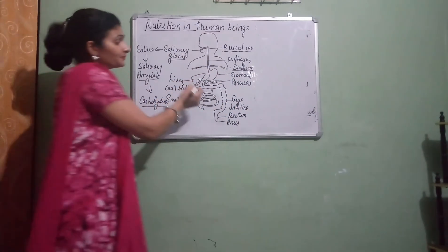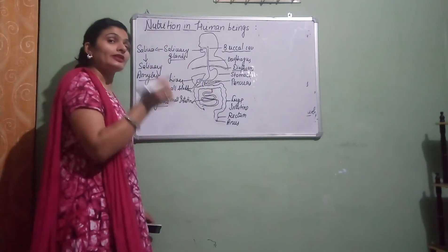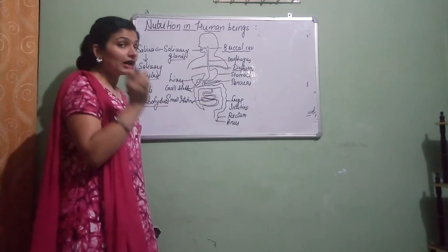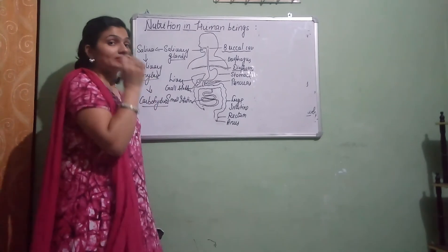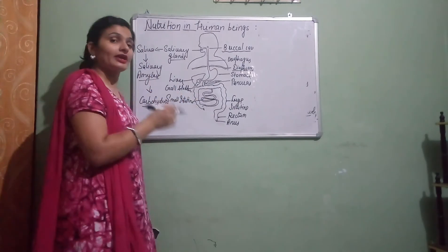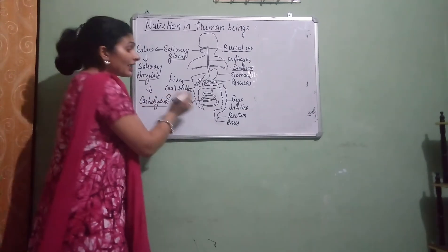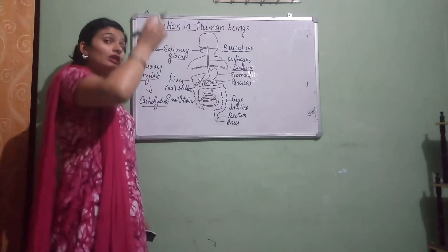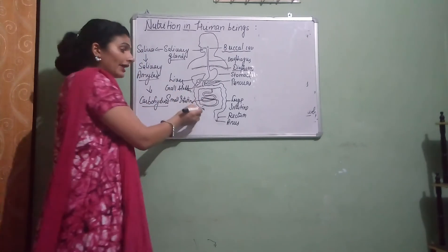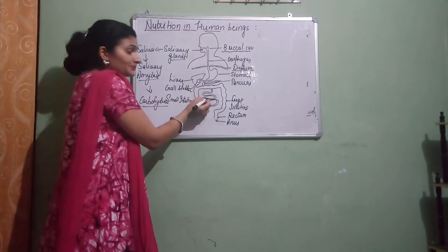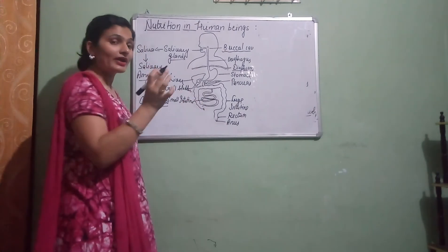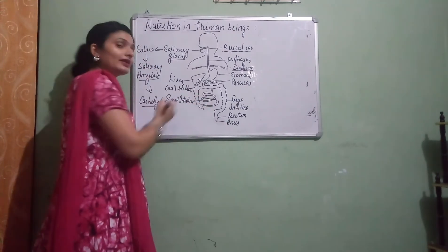Why is the small intestine of herbivores longer than that of carnivores? Because herbivores have to digest cellulose, which takes a long time to digest. Another question: small intestine is actually a very long tube, so why is it called small and the other called large intestine? Small intestine is narrow, and large intestine is wide — that is why they are named so.